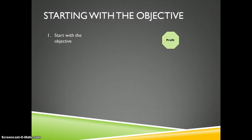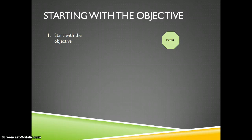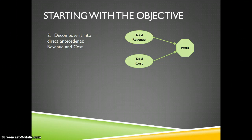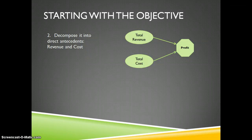Let's start with our objective. Profit is the thing we're trying to maximize, so we draw an octagon on the right-hand side of the page. Now we think about what drives profit. Our pricing decision does in some way, but not directly — what comes in between? The most logical way is to decompose profit into a revenue side and a cost side: profit equals revenue minus cost. Now we have intermediate variables to calculate from further data as we go from right to left.